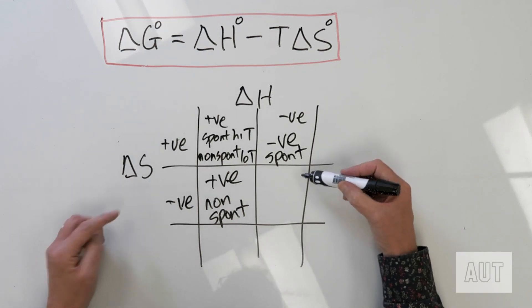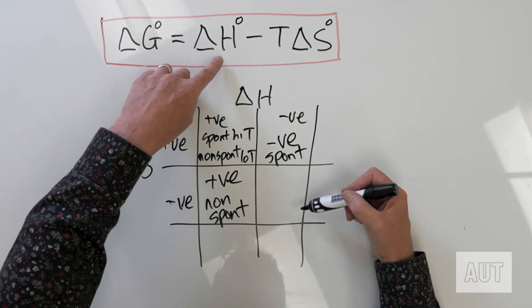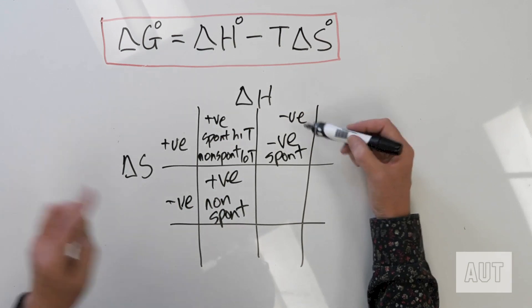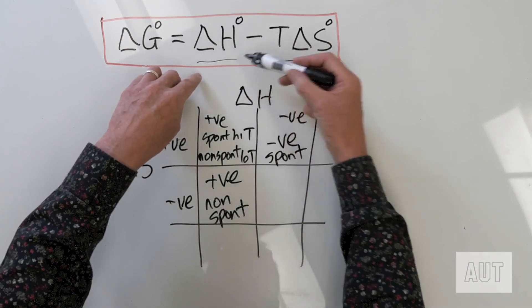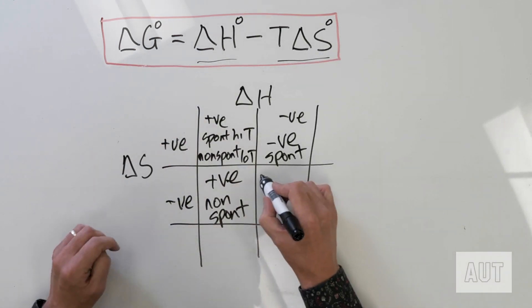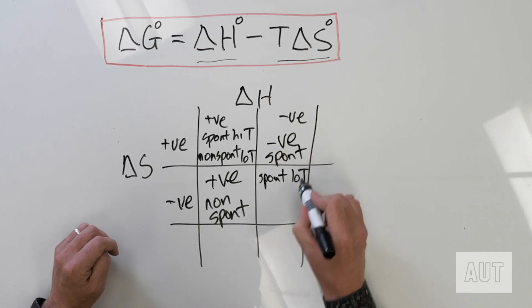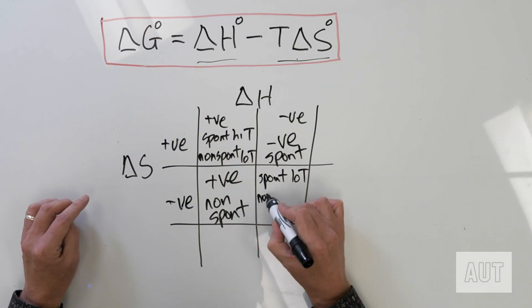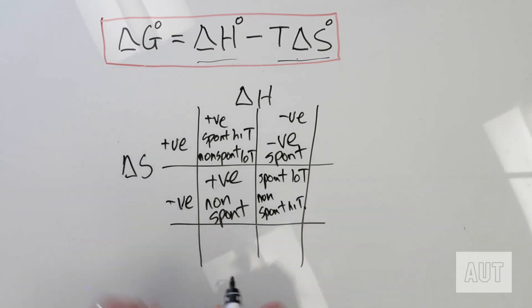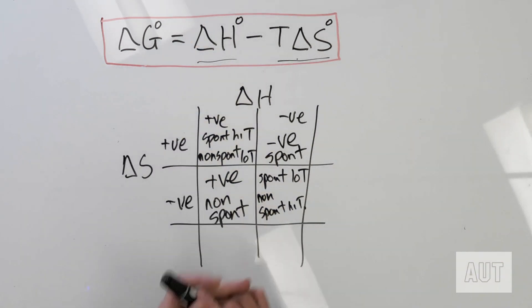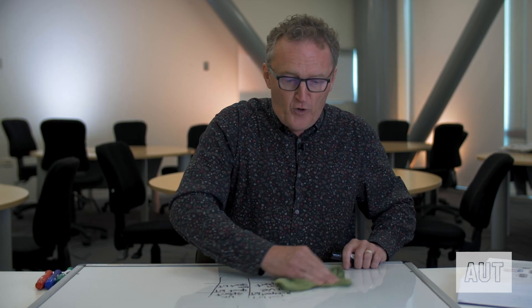Conversely, if both ΔH and ΔS are negative, a negative minus a negative can be negative or positive depending on which term dominates. At low temperature, the T·ΔS term is smaller, so negative minus a small negative gives a negative — spontaneous at low temperature. At high temperature, the T·ΔS term becomes large and dominates, making the result positive — non-spontaneous at high temperature. So Gibbs energy depends on both the sign and magnitude of ΔH and ΔS.